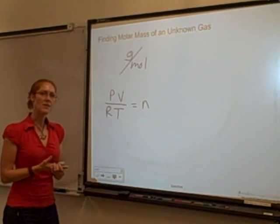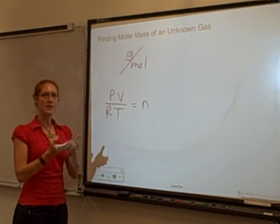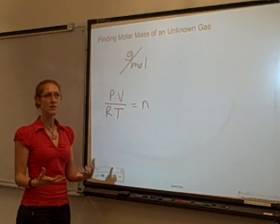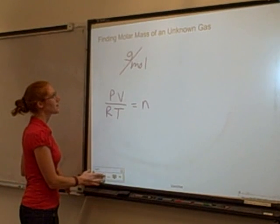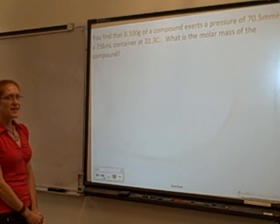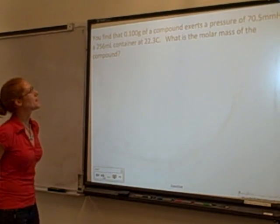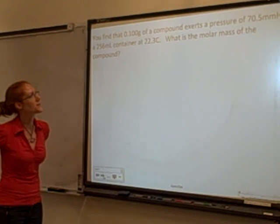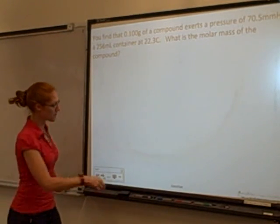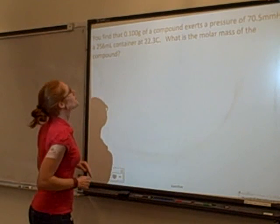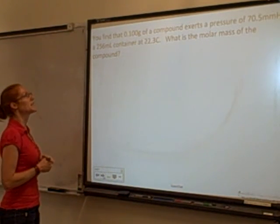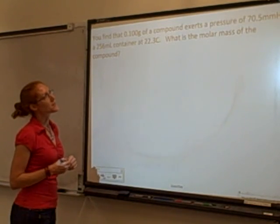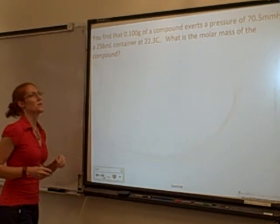So this is one way that we can actually learn a little bit about a gas that is unknown, and then we can help to identify that gas. Well, at least we know the molar mass, so we can narrow down what it might be. So here's an example. You find that 0.1 grams of a compound exerts a pressure of 70.5 millimeters of mercury in a 256 milliliter container at 22.3 degrees Celsius. What is the molar mass of the compound?